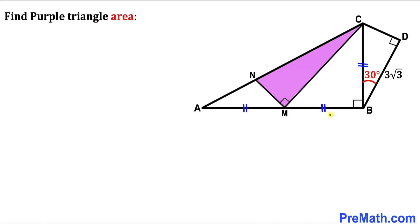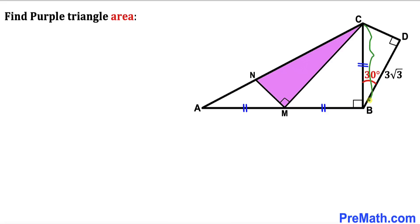Welcome to pre-math. In this video we have got two right triangles: triangle ABC and right triangle BDC put together as shown in the diagram, such that side length BD is 3 times the square root of 3 units, angle CBD is 30 degrees. The purple right triangle is fully confined in the big right triangle ABC, and side length BC equals segment MB equals segment AM — in other words, M is the midpoint. Our task is to calculate the area of this purple shaded triangle.